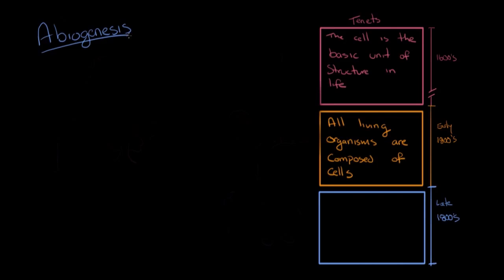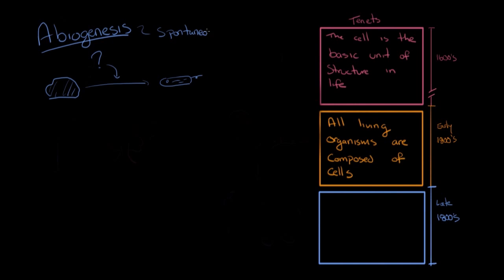Abiogenesis is actually a very old theory, dating as far back as the 4th century BC with Aristotle, and up to the 1800s it was the predominant theory of how life came into existence. Imagine you have a rock — scientists at the time thought there was some unknown substance in the air that would combine with non-living materials, such as a rock, and from that it would produce life. The mechanism of this theory was thought to be that of spontaneous generation — the idea that life was spontaneously made from non-life.